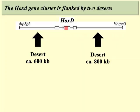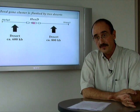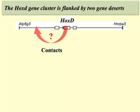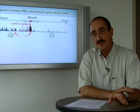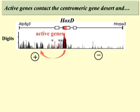Interestingly, this gene cluster is flanked by two gene deserts. Thomas Montavant, who did most of this work, used a chromosome conformation capture approach to see whether the promoters of these active genes contact DNA sequences located within these gene deserts. Thomas realized that many contacts are established, but only in the gene desert located on the side of the active genes.